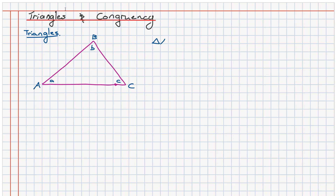Triangle ABC isn't the only way you can reference a triangle. If you wanted to, you can go BCA or triangle CAB — it doesn't really matter what order it goes in, so long as you get the three letters that compose the triangle you're talking about. That's all you need to do.